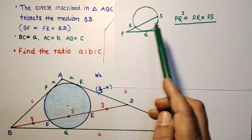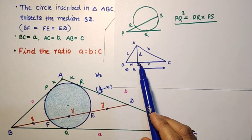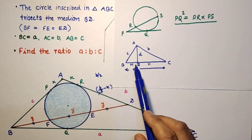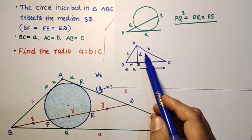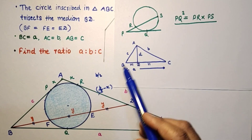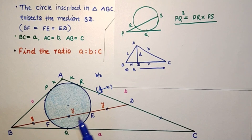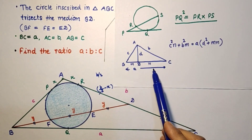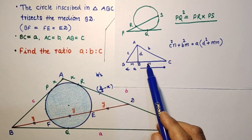Second, Stewart's theorem: in triangle ABC, if cevian AD divides BC such that BD equals M and DC equals N, and AD equals D, then: C²·N + B²·M equals A·(D² + M·N). This is Stuart's theorem, which we will use in this problem.